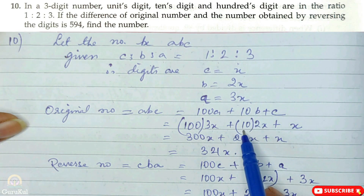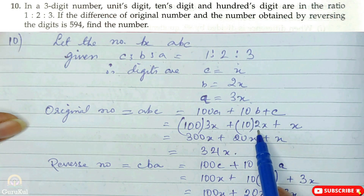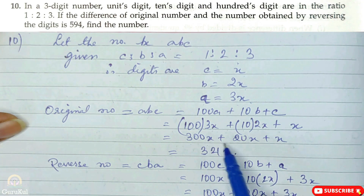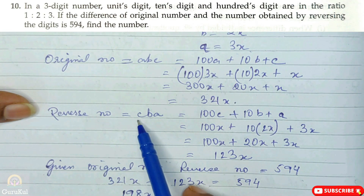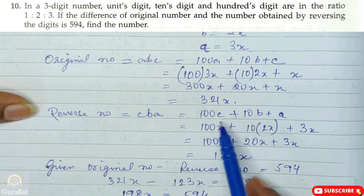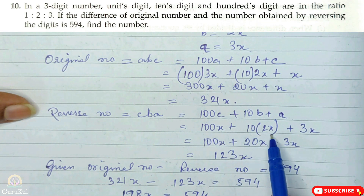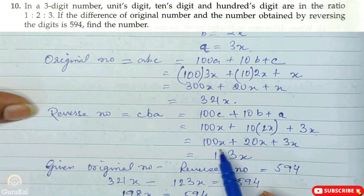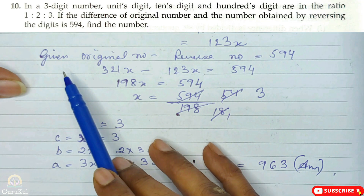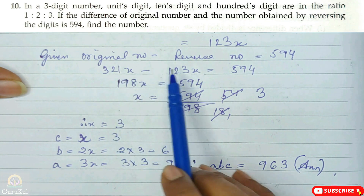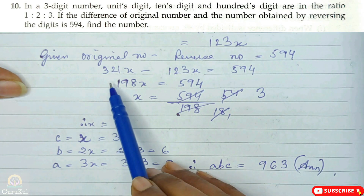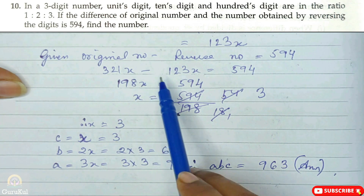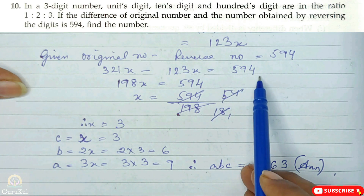Let C = X, B = 2X, A = 3X. The original number in generalized form is 100A plus 10B plus C = 100(3X) plus 10(2X) plus X = 300X plus 20X plus X = 321X. The reverse number C, B, A in generalized form is 100C plus 10B plus A = 100X plus 20X plus 3X = 123X. The question states the difference between the original and reverse number is 594.